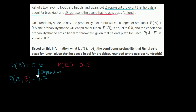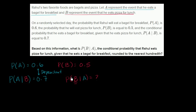Before going further, let's just think about what they actually want us to figure out. The probability of A given B is equal to 0.7 — that's what we wrote. Based on this information, what is the probability of B given A? That is, the conditional probability that Rahul eats pizza for lunch given that he eats a bagel for breakfast, rounded to the nearest hundredth.